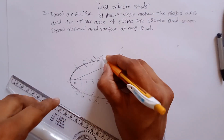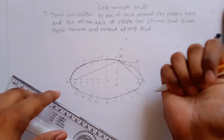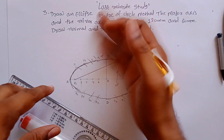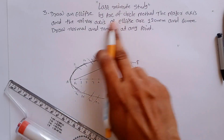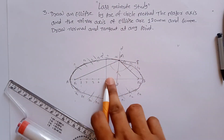The tangent is marked as T and T-dash. This is nothing but the ellipse by arc of circle method, with the normal and tangent also constructed.